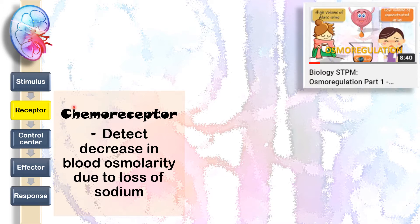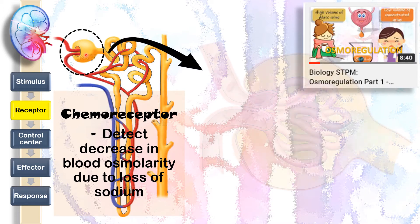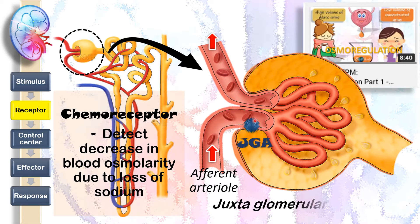Now, this chemoreceptor is not located in the brain. Instead, it is located in the kidney at the glomerulus of the nephron. It is at the afferent arteriole where you find the chemoreceptor called JGA — juxtaglomerular apparatus. The JGA will detect the decrease in blood osmolarity caused by the loss of sodium.